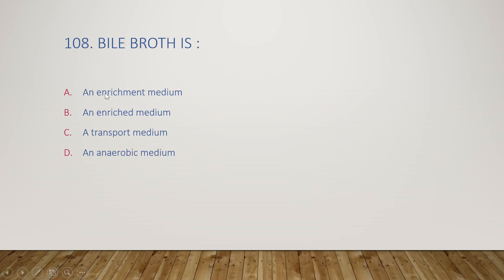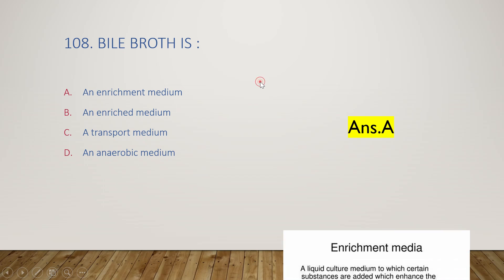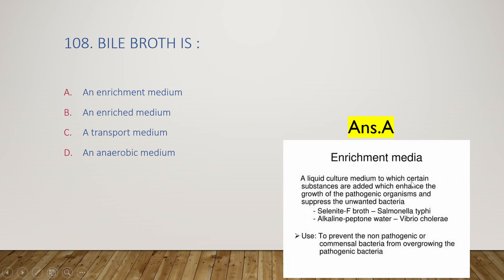Next question: bile broth is an enrichment medium, enriched medium, transport medium, or anaerobic medium? The right answer is option A, an enrichment medium. Enrichment media are liquid culture media to which certain substances are added to enhance growth of pathogenic organisms and suppress unwanted bacteria. Examples include selenite F-broth for Salmonella typhi and alkaline peptone water for Vibrio cholerae. The purpose is to prevent non-pathogenic bacteria from overgrowing the pathogenic bacteria.